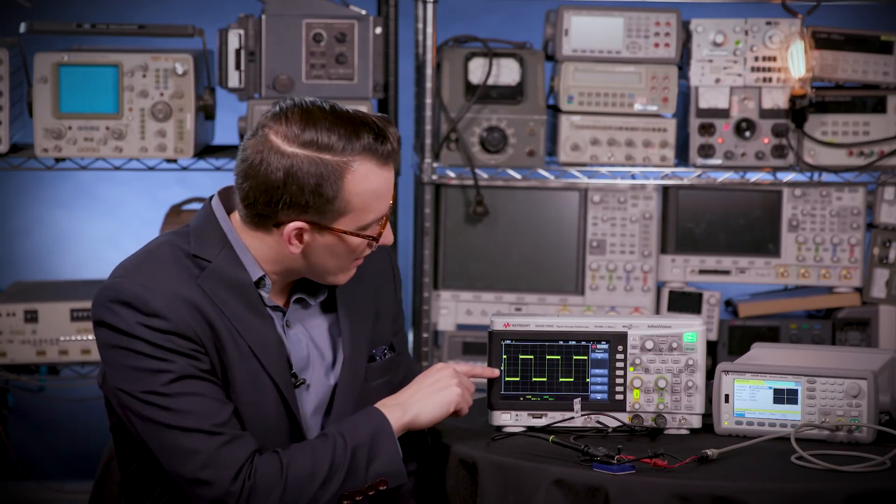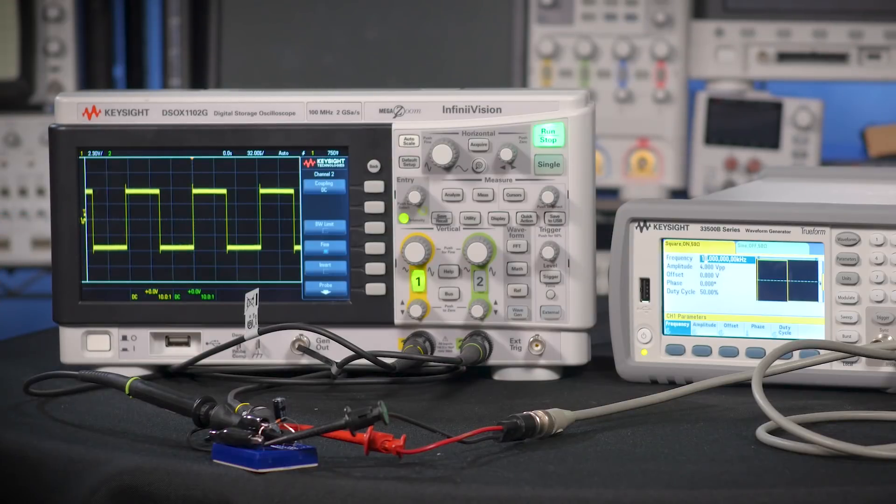Channel 1 is the input, and you can see it centered right around ground, and channel 2 is the output, which you can see is now bottoming out around ground. It's been DC rectified.